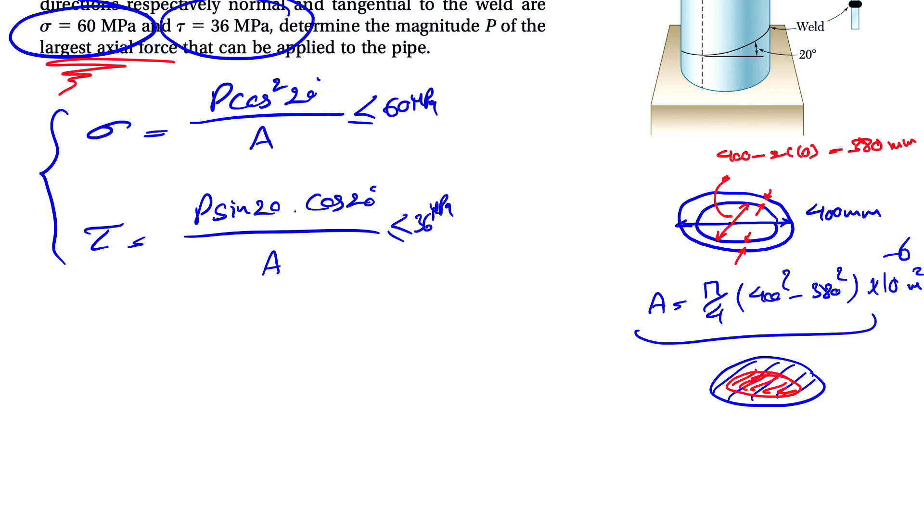So let's figure out from the first one. So from the first one, our P, let's call this one first, this one second. So our P in here would be normal stress times A over cosine squared of 20 degrees. So 60 megapascal, 60, 10 to the sixth times cosine squared of 20 degrees.